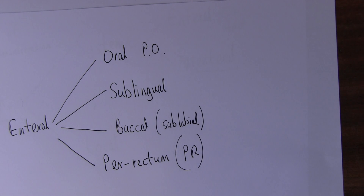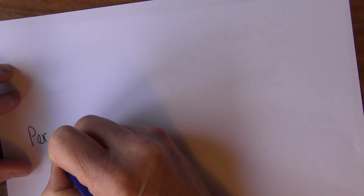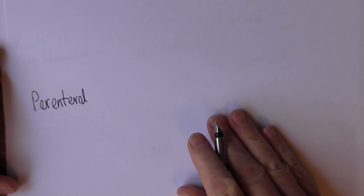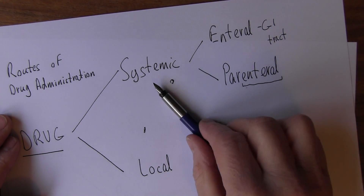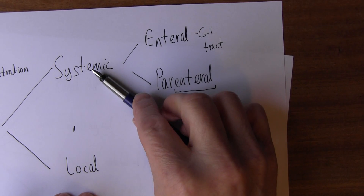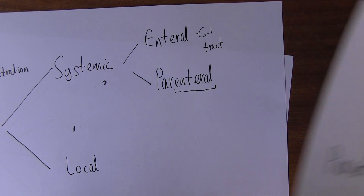As well as the enteral route, to give drugs systemically we can give them via the parenteral route — beside the gastrointestinal tract. The most well-known parenteral routes are the injection routes. Injections can be intravenous — giving the drug directly into a vein, not into an artery.